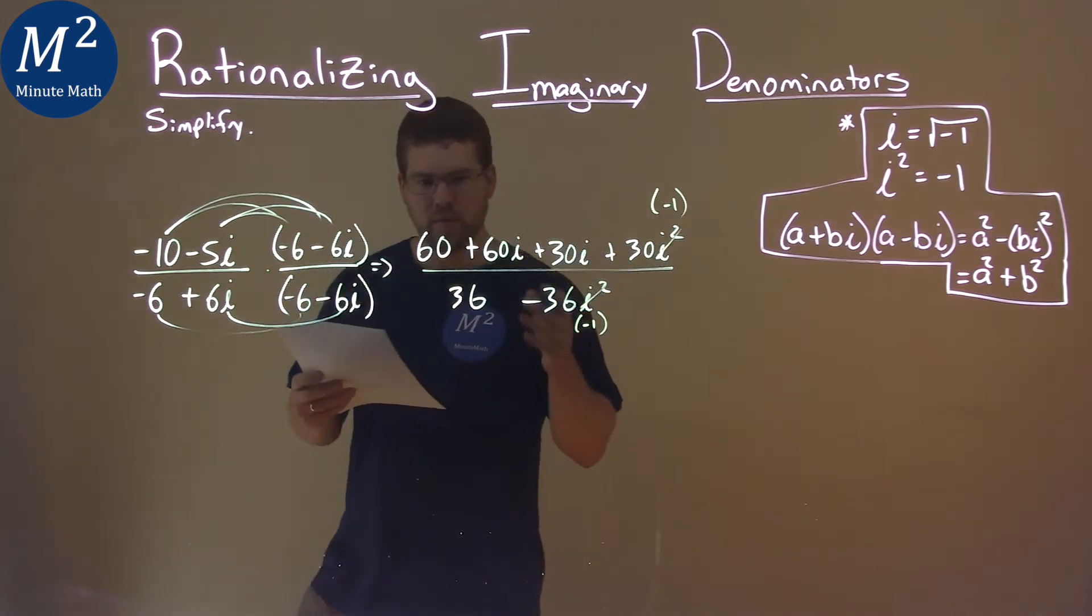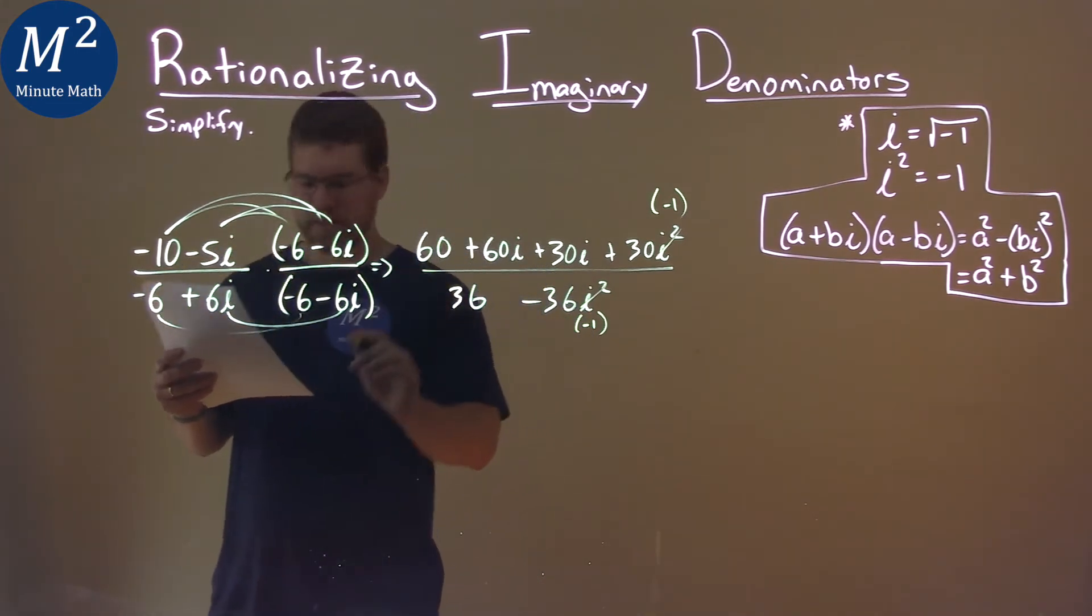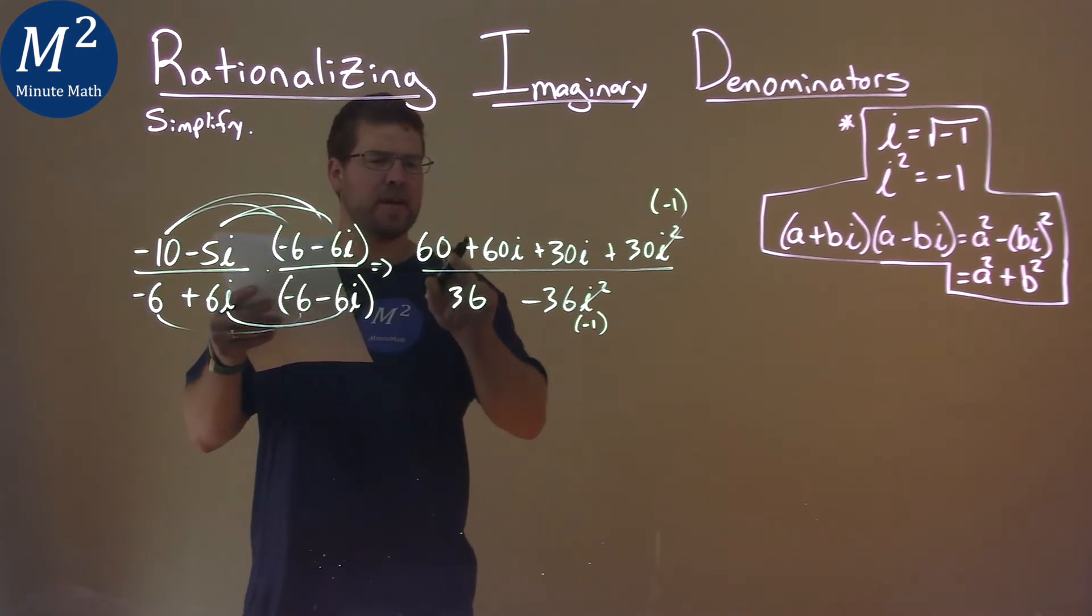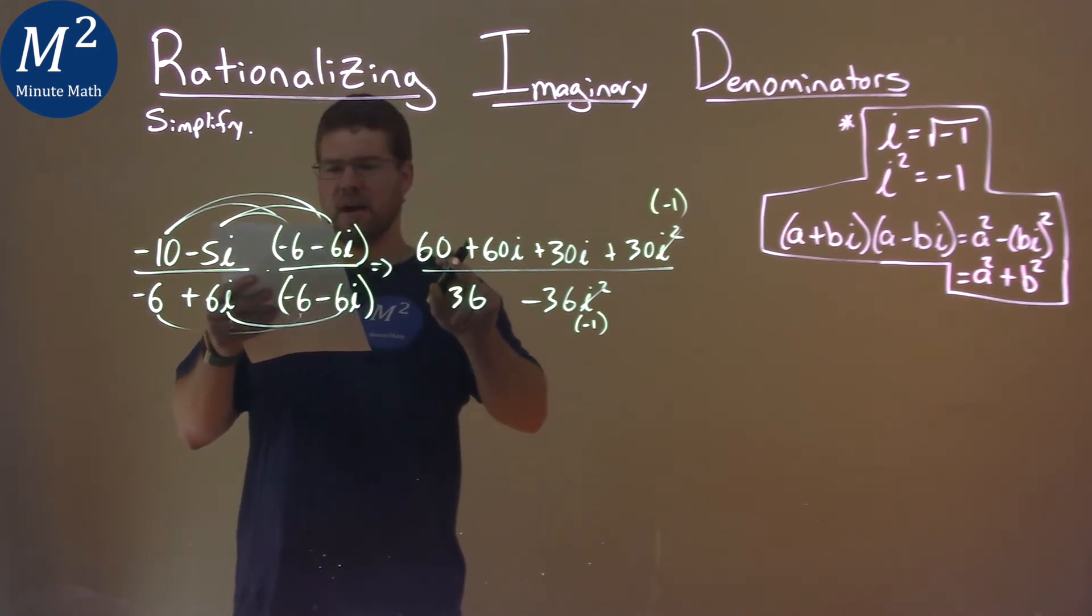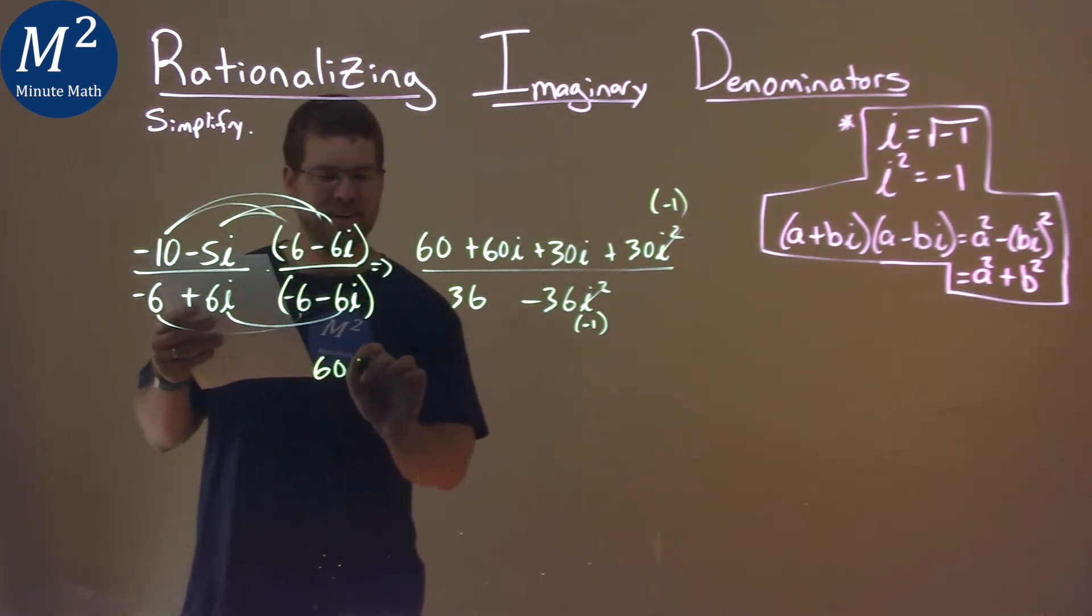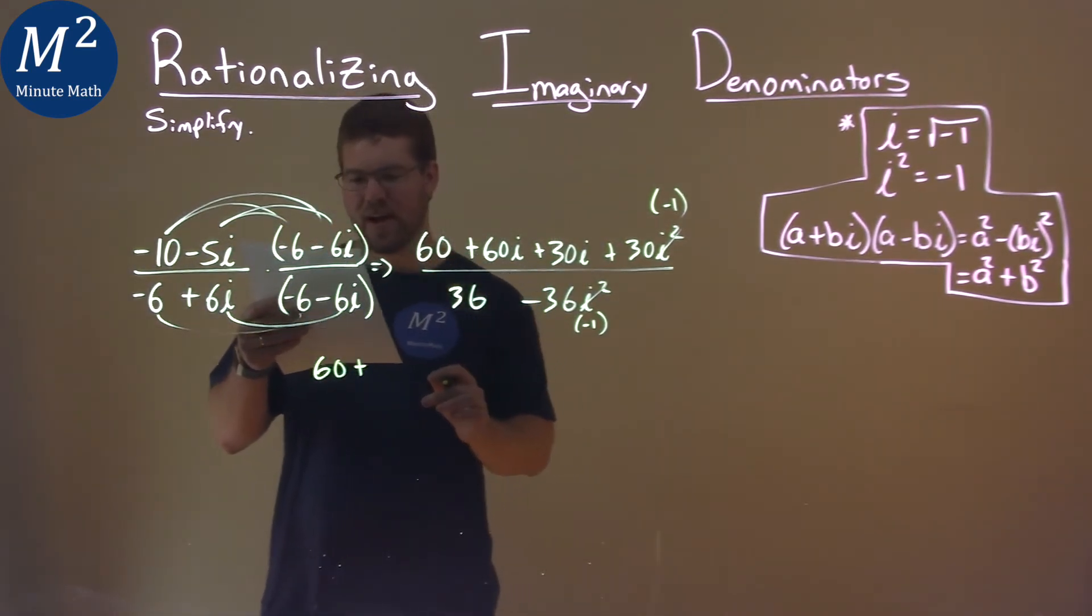So if we simplify this out: 60... let's bring it down and see what we have. 60 here plus 60i plus 30i is 90i.